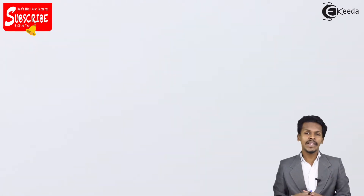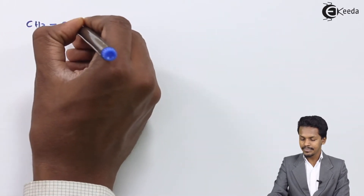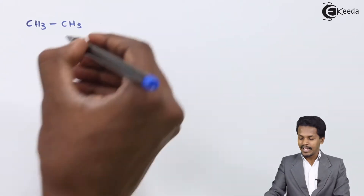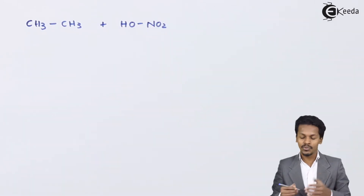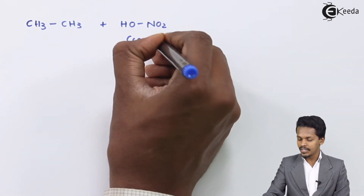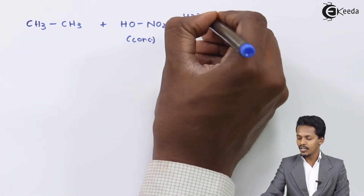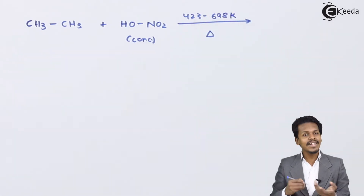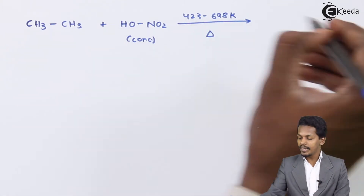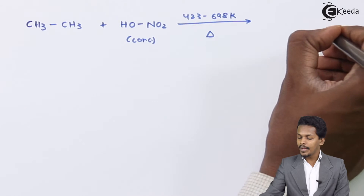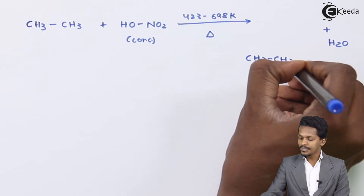Suppose we are considering the lower member of alkane — CH3CH3, that is ethane. And suppose we are treating it with concentrated HONO2, also known as HNO3, at a temperature of 423 to 698 Kelvin. In this condition, HNO along with one hydrogen of the alkane is removed in the form of H2O, and the main product left is CH3CH2NO2.